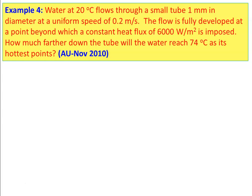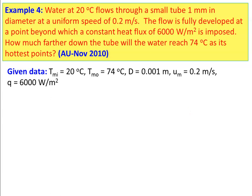Water at 20°C flows through a 1 mm diameter tube at 0.2 m/s. Flow is fully developed at a point beyond which a heat flux of 6000 W/m² is imposed. How far down the tube will the water reach 74°C? Given: inlet temperature = 20°C, outlet temperature = 74°C, diameter = 0.001 m, mean velocity = 0.2 m/s, heat flux = 6000 W/m².